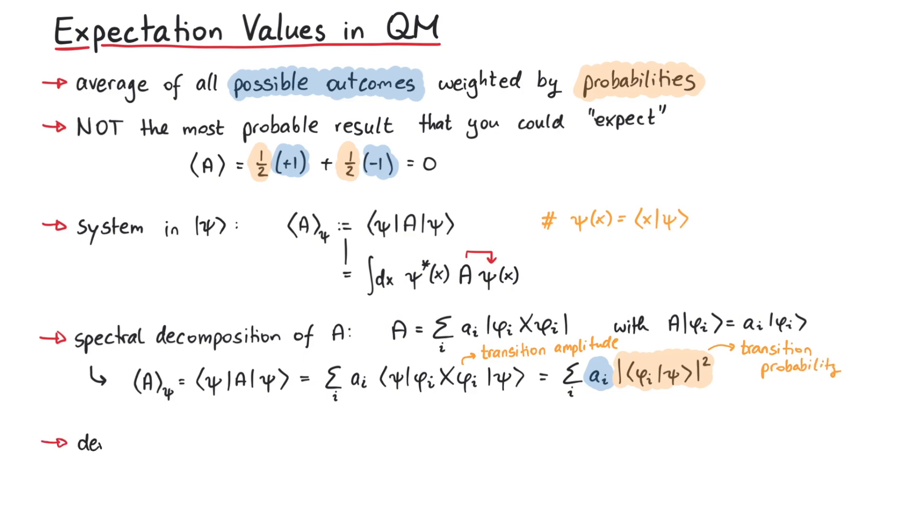Second, if we use the density matrix formalism, where rho is given as psi psi, we can calculate the expectation value of A by taking the trace over rho times A. In quantum mechanics, taking the trace over an operator means to sum over matrix elements of that operator between states of a complete basis.